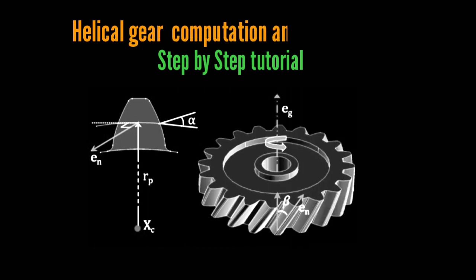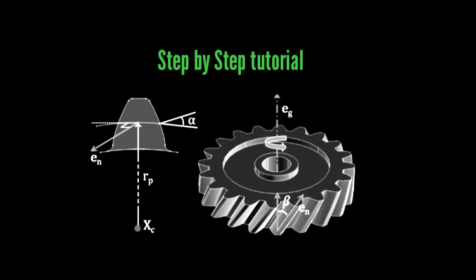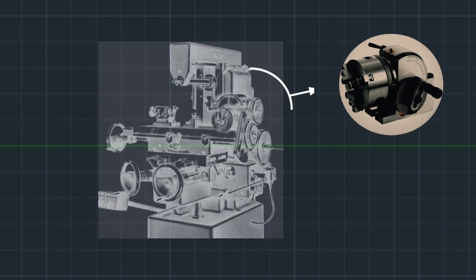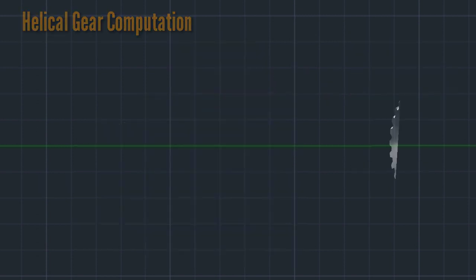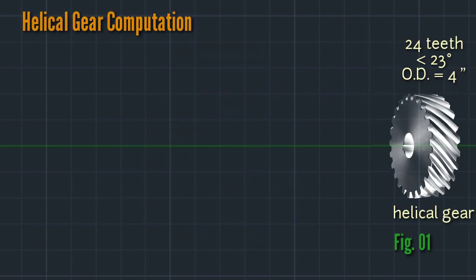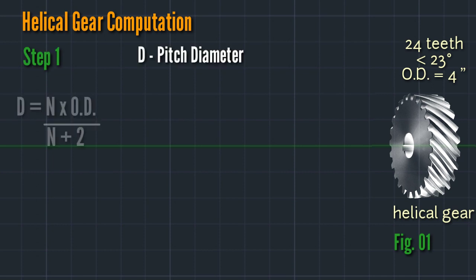In this video we learn about helical gear computation and publication — a step-by-step tutorial. This is the equipment: milling machine and dividing head. We proceed to helical computation in figure 01. We have 24 teeth, 23-degree helix angle, and 4 inches outside diameter.